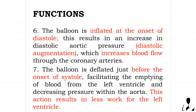Six, the balloon is inflated at the onset of diastole, resulting in an increase in diastolic aortic pressure — diastolic augmentation — which increases blood flow through the coronary arteries. Seven, the balloon is deflated just before the onset of systole, facilitating the emptying of blood from the left ventricle and decreasing pressure within the aorta.